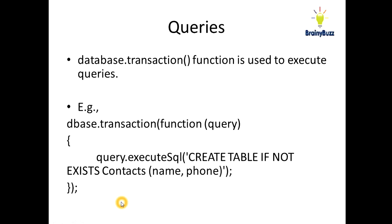After that, we execute queries. The database.transaction function is used to basically execute the queries. I have written DBase.transaction, then a function. Here you pass the query — execute SQL will be the method, and in this you write the queries. Like, if you want to create the table if it does not exist — CREATE TABLE IF NOT EXISTS — contacts will be the name of the table.